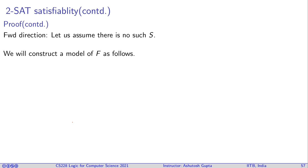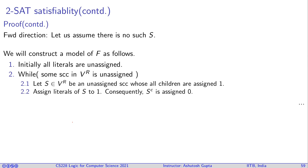We construct a model as follows. Initially all literals are unassigned. We iteratively pick an unassigned SCC S whose children in the reduced graph are all already assigned to 1, set all literals of S to 1, and consequently set all literals of the complementary SCC to 0. We repeat until all nodes are assigned.